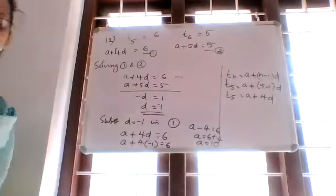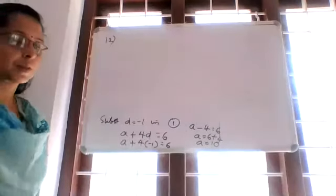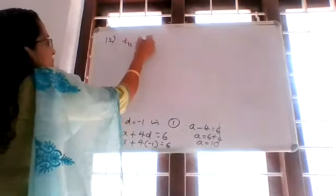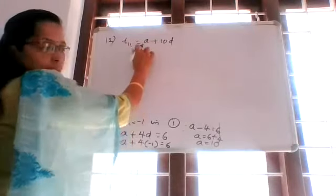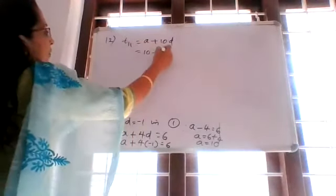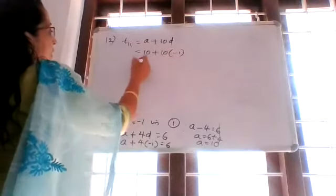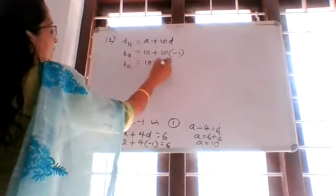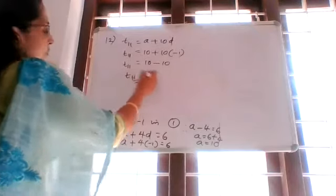We want to find T11. T11 is equal to A plus 10D. A is 10 and D is negative 1. So T11 is equal to 10 plus 10 into negative 1, which is 10 minus 10. So T11 is equal to 0.